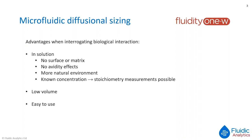With no surface or matrix, there's also a more natural environment. For certain challenging molecules — such as intrinsically disordered proteins, membrane proteins, and multi-protein complexes — this is of particular advantage. And because it's purely in solution, we know the concentration of all species present, which allows us to determine stoichiometries. As soon as you fix a molecule on a surface, you lose control of the available concentration and can no longer determine stoichiometry in a straightforward manner.